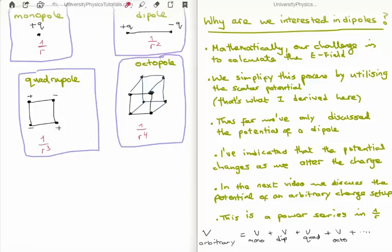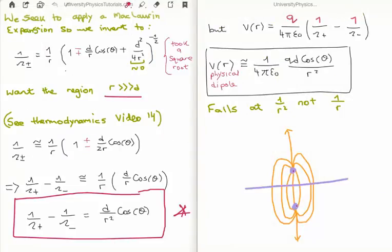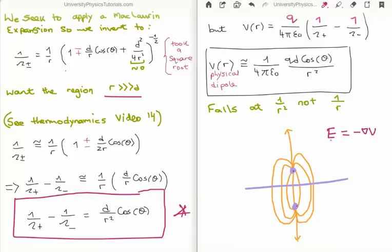Why are we interested in electric dipoles at all? Mathematically, our challenge has always been to calculate the electric field, and we know at this stage that we try to simplify this process by using the scalar potential. What I've derived here is the approximate scalar potential for a physical electric dipole. We then just apply the formula that E equals minus the gradient of the electric potential, and what we have is the electric field. So that's pretty straightforward to calculate.